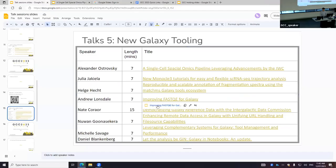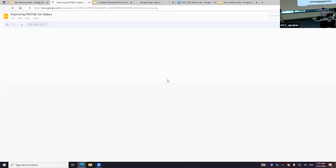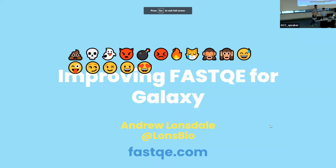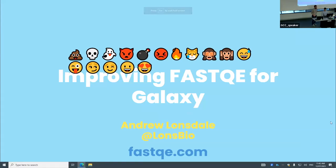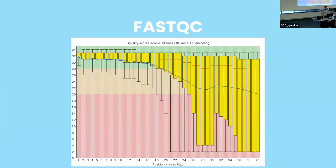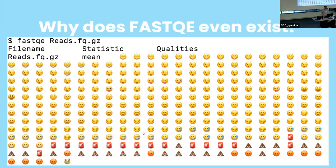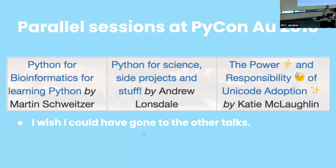Next up is Andrew from the Peter McCallum Cancer Centre in Victoria. This is FastQC — everyone's probably seen it for assessing quality of sequencing data. This is FastQE, which is better because it does the same thing, but with emoji. So the question you're asking is: why does that even exist? Let's go back to a parallel session at PyCon in 2016. I combined my love of side projects, mathematics and emoji. You look at FastQ data which we encode as scores in ASCII characters — why use ASCII characters? Let's use emoji instead.